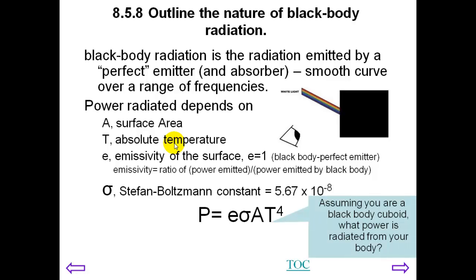A little exercise for you which will also be on the reading quiz. Assuming you're a black body cuboid, so let's say you're 1.8 metres tall, your width is let's say 40 centimetres, your thickness is let's say 20 centimetres on average. So you can find the total area of your body, find your temperature in Kelvin using this constant here. And let's assume you're a black body, how much power will you radiate?